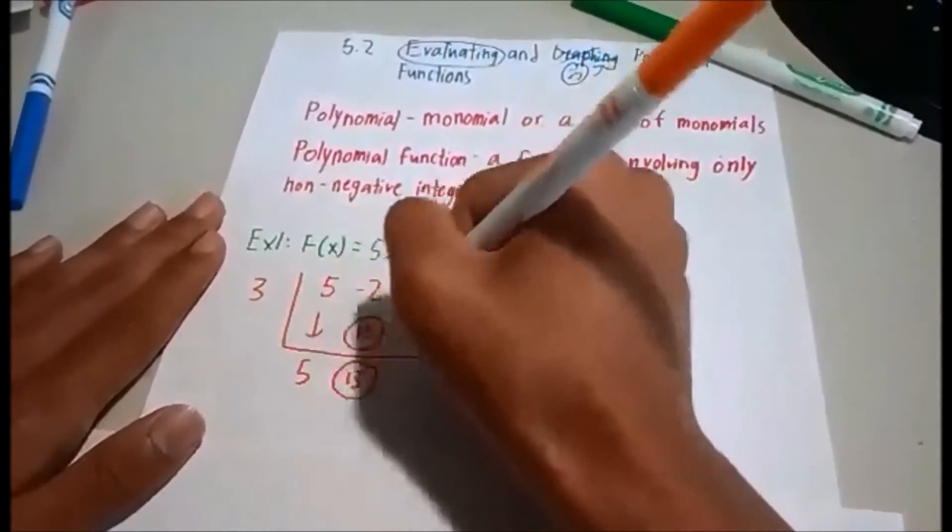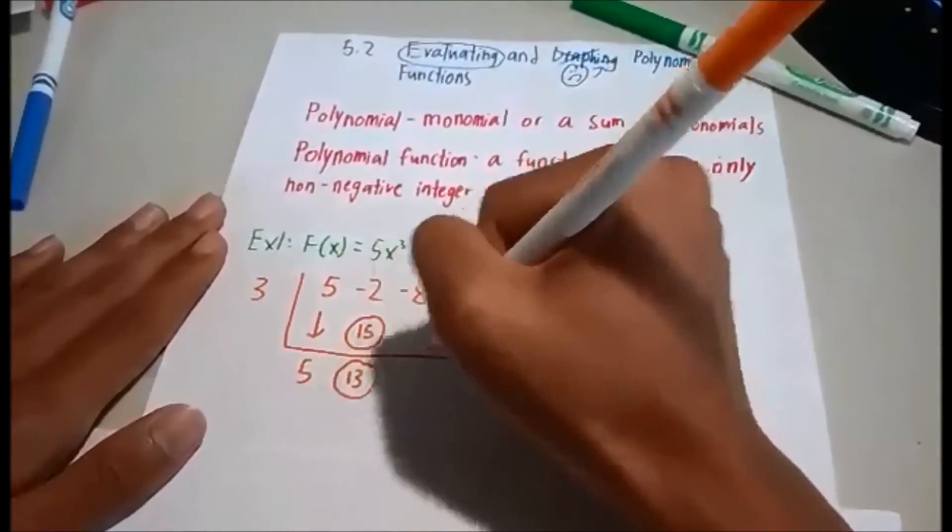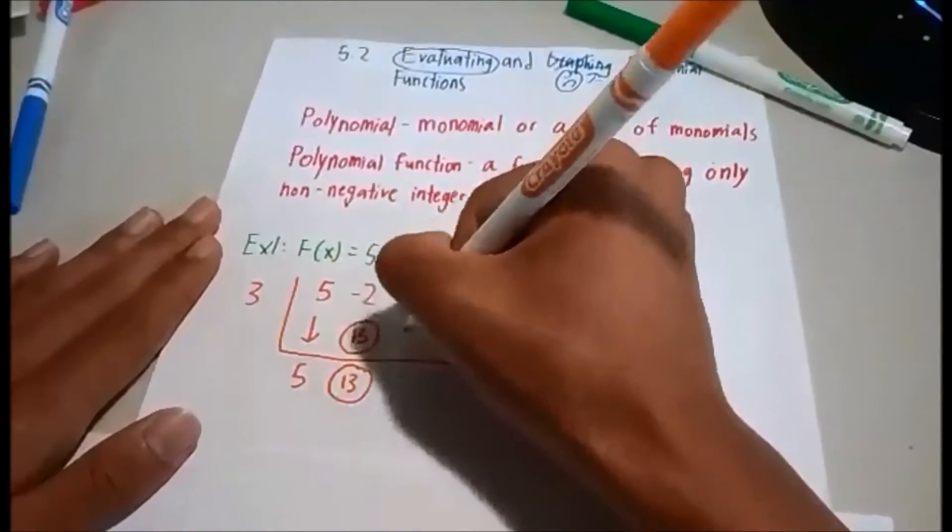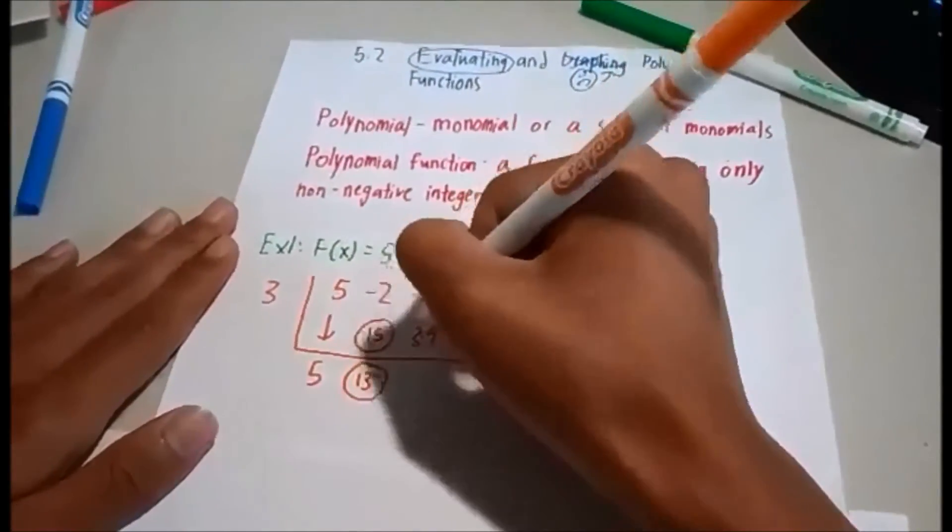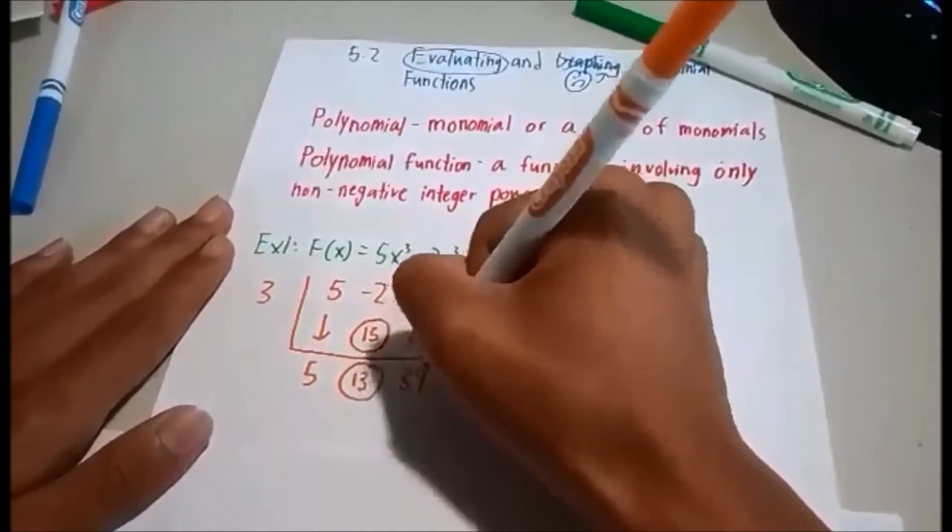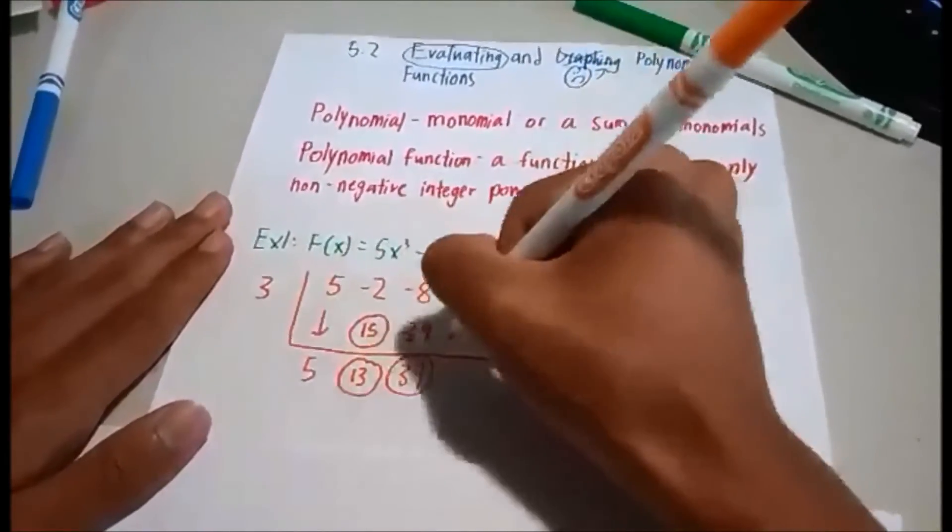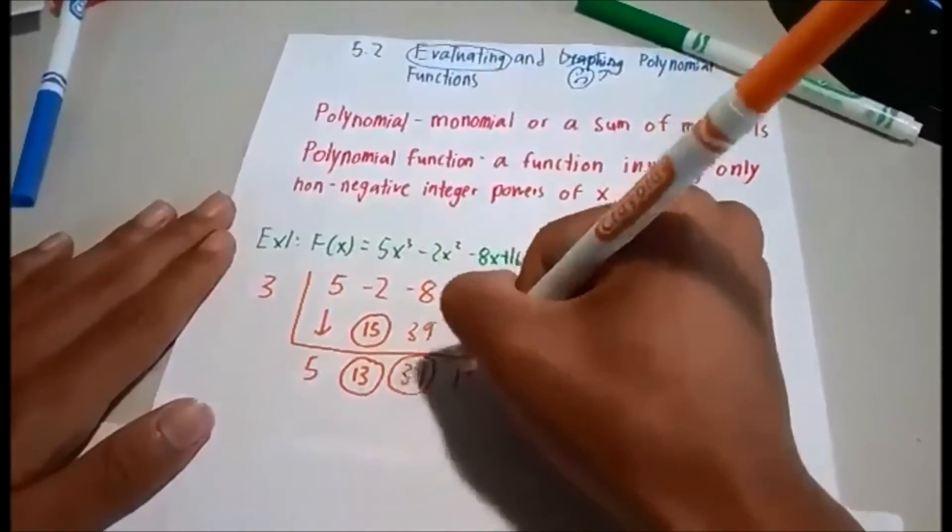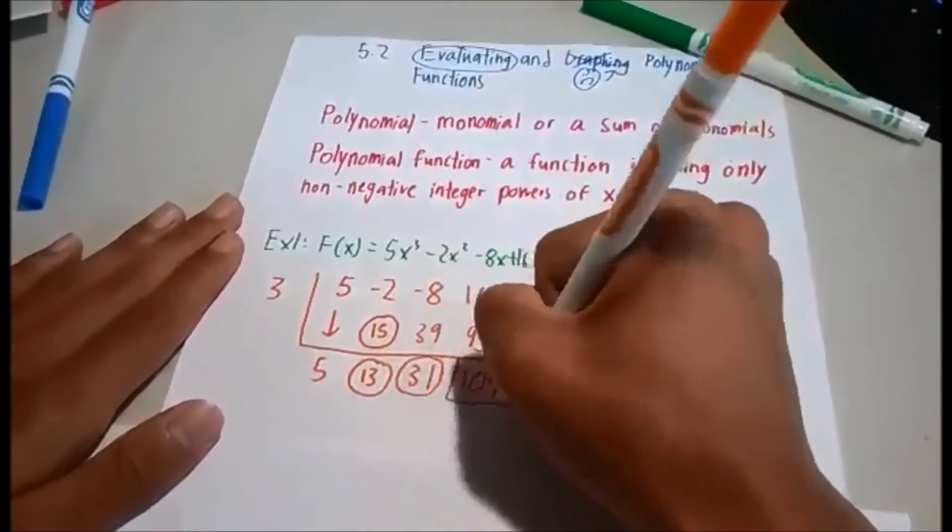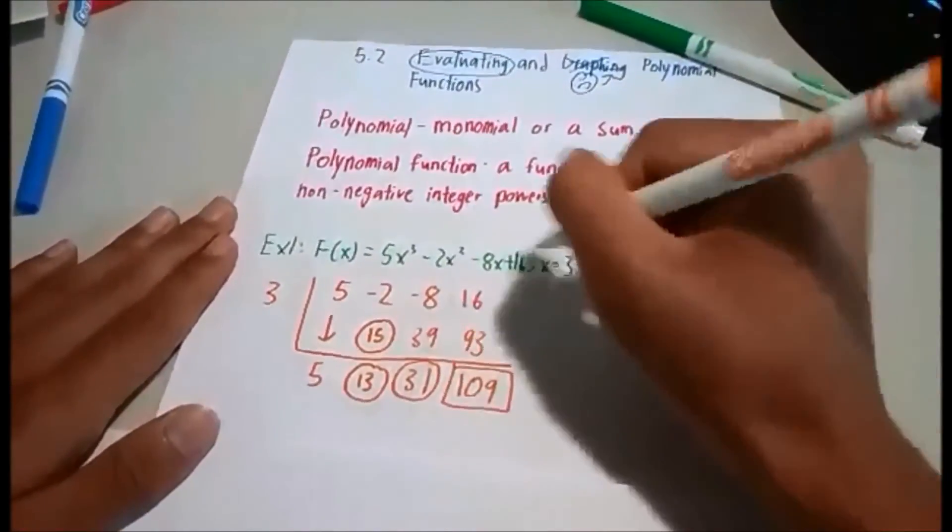13 times 3. We will be following the same exact concept for the next few ones. So 39 will follow here and 31 will be your sum here. And to get the last one, you will get a sum of 93. And your answer is right here of 109. And that's the first problem.